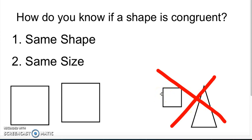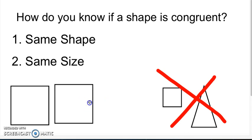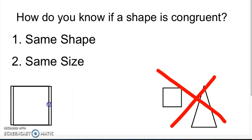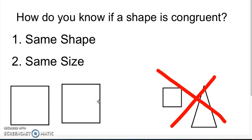The shapes also need to be the same size. These two squares are the same size, and we can test this by placing one square over the other. When we place one square over the other, we can see that they are indeed congruent because they are the same shape and the side lengths are exactly the same.